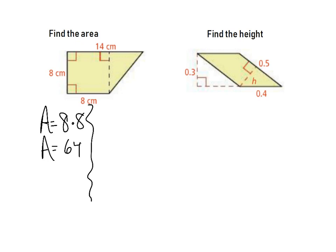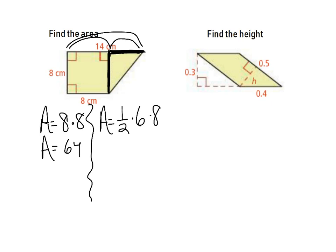For the triangle portion, it's one-half base times height. There's a right angle, so the height is 8. The base is 6, because the whole figure is 14 wide and 8 is taken by the square, leaving 6. One-half times 6 times 8 equals 24. Adding the square and triangle: 64 plus 24 gives a grand total of 88 square centimeters.